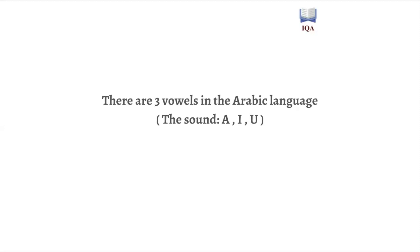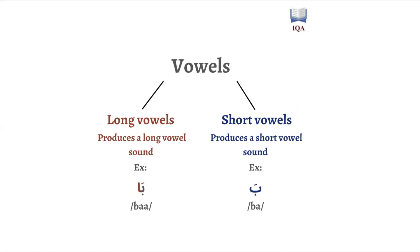There are three types of vowels in the Arabic language: the a, the e, and the u, and we're going to be exploring them in this video. Vowels can be broken down into two different categories: long vowels and short vowels. Short vowels produce a short vowel sound, like 'ba,' while long vowels produce a long vowel sound, like 'baa.'